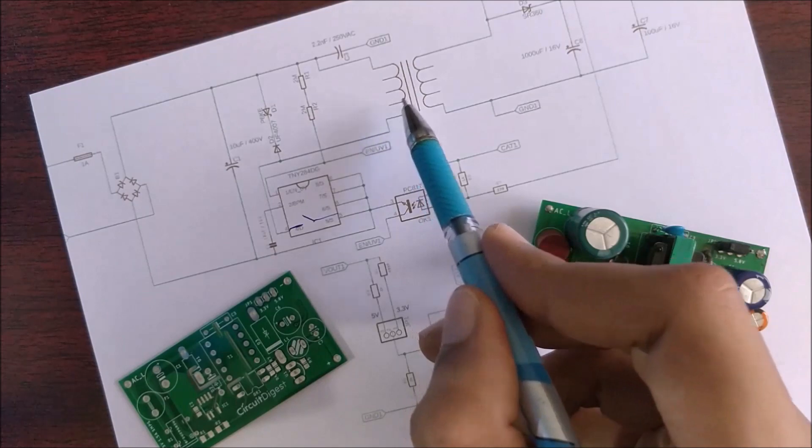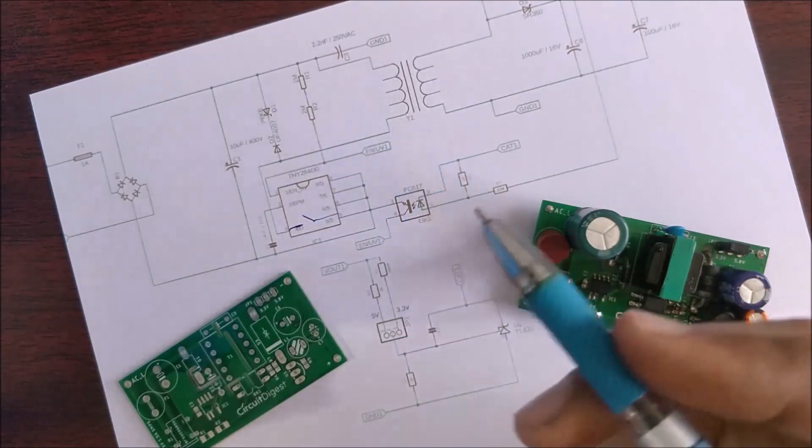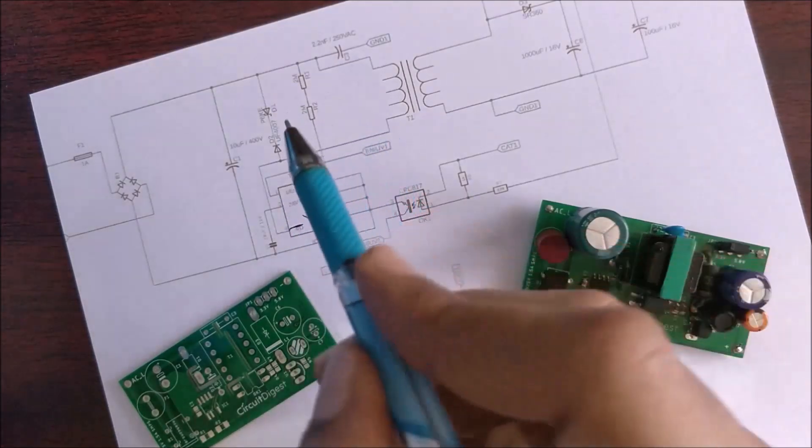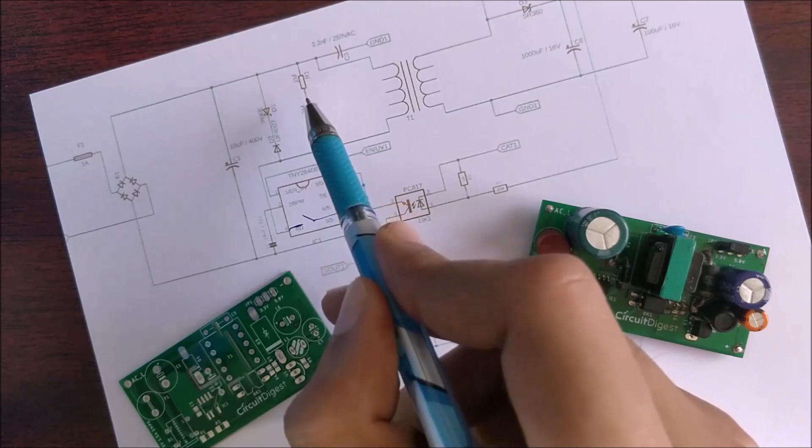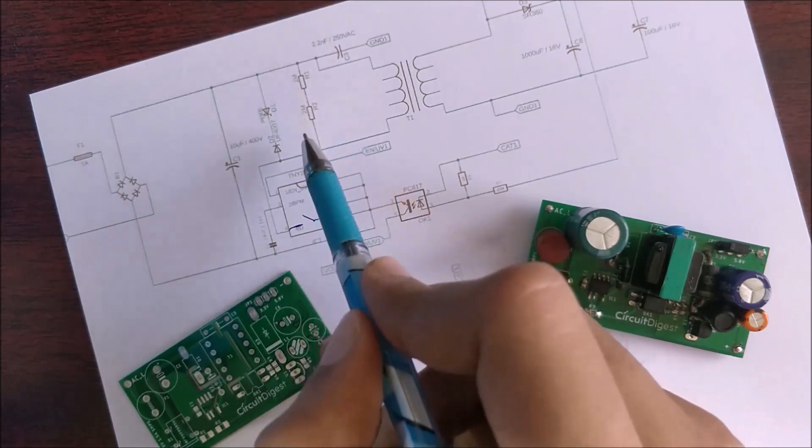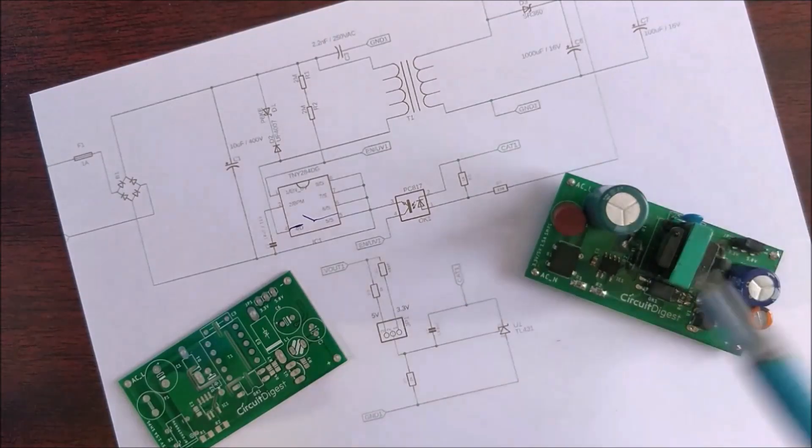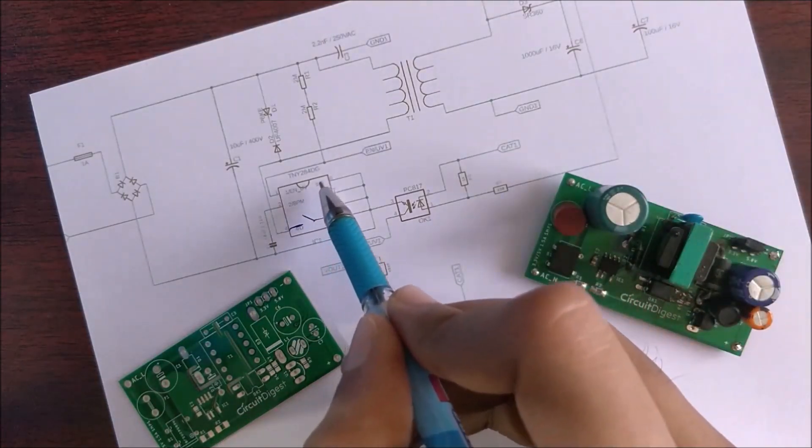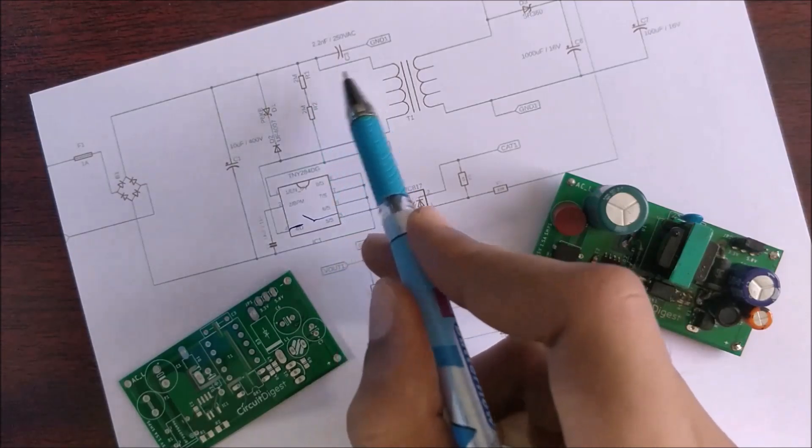This will be the primary side of the transformer and this will be the secondary side. Then there are a few other components: the resistors R1 and R2 each are 2 megaohms. These two resistors together will form the sense resistor network which will be used to power our controller as well as to sense the voltage and current on the primary side.